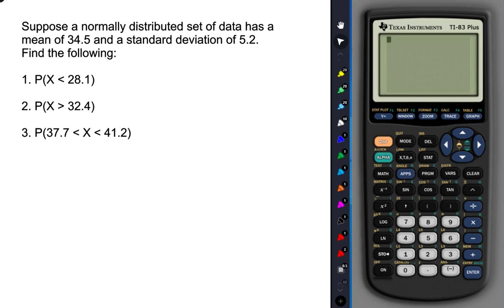To find probabilities based off of a normal distribution that has a mean other than 0 and 1, we can use the same function in the calculator as we did in the last section. We just have to use a couple of new inputs.